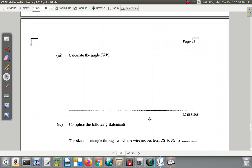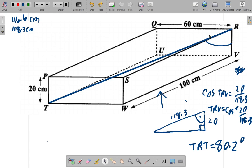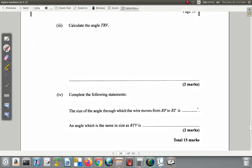Let's see what else they say. Complete the following statement: the size of the angle through which the wire moved from RP to RT is... That angle would be up here, a smaller angle. Remember this was the 80.2, so 90 minus 80.2 would be 9.8. So 9.8 degrees.